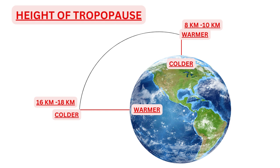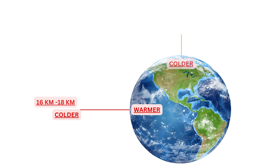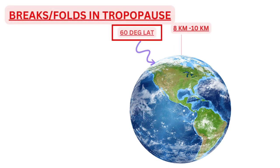At ground level, the equator is warmer than the poles, but at the tropopause it is the other way round. Since the height of tropopause is higher at the equator, the temperature there is colder due to lapse rate compared to the temperature at the tropopause over the poles.